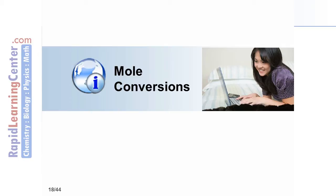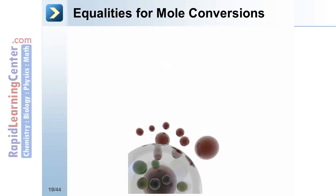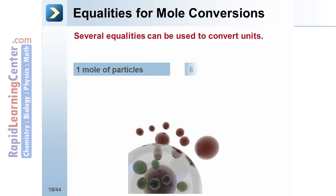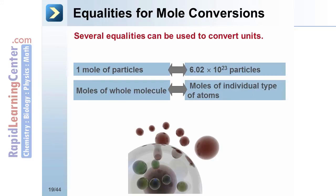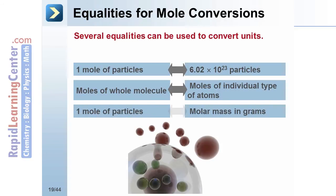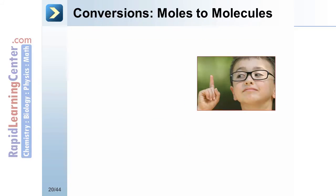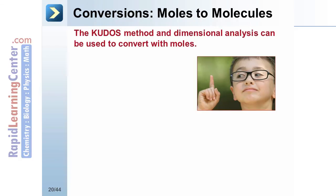How are mole conversions completed? Several equalities are used when converting with moles. Avogadro's number is used when converting between moles and particles. The ratio of individual components to the overall molecule can be used. And the molar mass is used to convert between moles and grams. The kudos method can be applied to these problems as well. Identify the known. Identify the unknown. Write your definitions. Determine the output. And substantiate your answer.